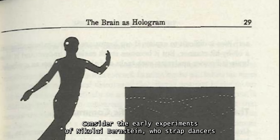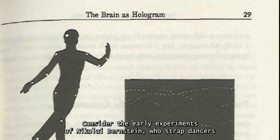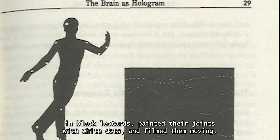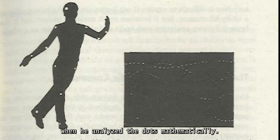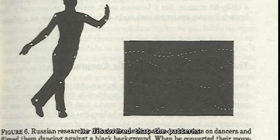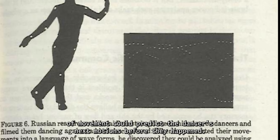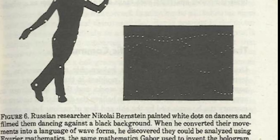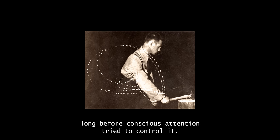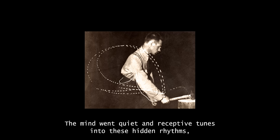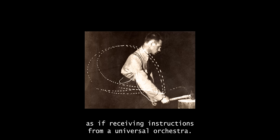Consider the early experiments of Nikolai Bernstein, who strapped dancers in black leotards, painted their joints with white dots, and filmed them moving. When he analyzed the dots mathematically, he discovered that the patterns of movement could predict the dancers' next motions before they happened. The body, in its physicality, was already whispering the poetry of thought, long before conscious attention tried to control it. The mind, when quiet and receptive, tunes into these hidden rhythms, as if receiving instructions from a universal orchestra.